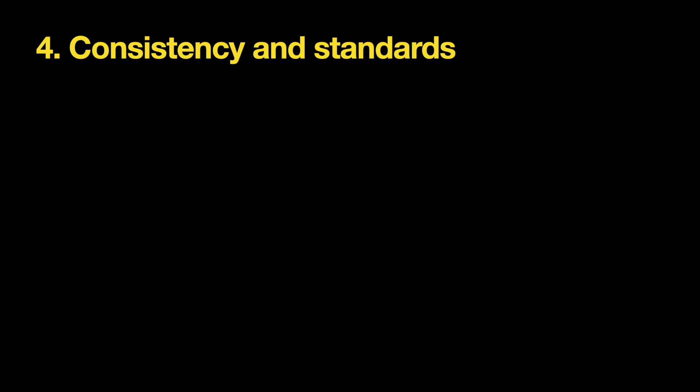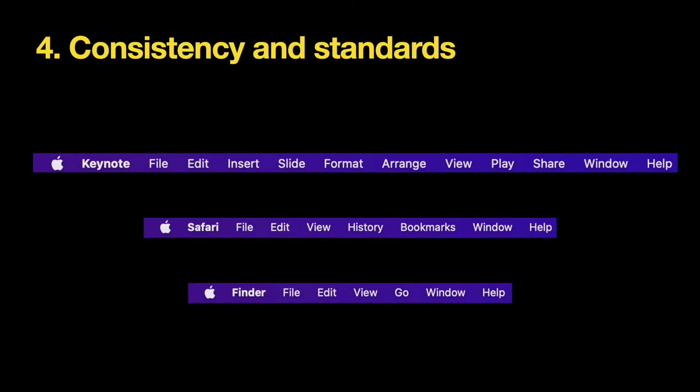Fourth, consistency and standards. Users shouldn't have to worry whether different words, situations, or actions mean the same thing. Designers should strive for consistent design — offering both internal consistency of individual design decisions within the product, and external consistency with platform standards. For example, the location and design of the navigation menu in Apple Mac OS is consistent: both the order of navigation options and their visual appearance remain the same across different apps.